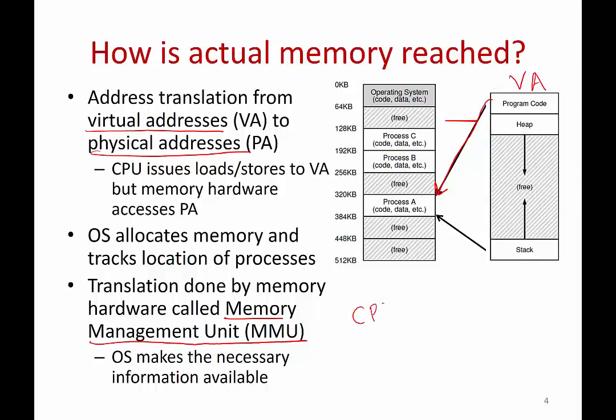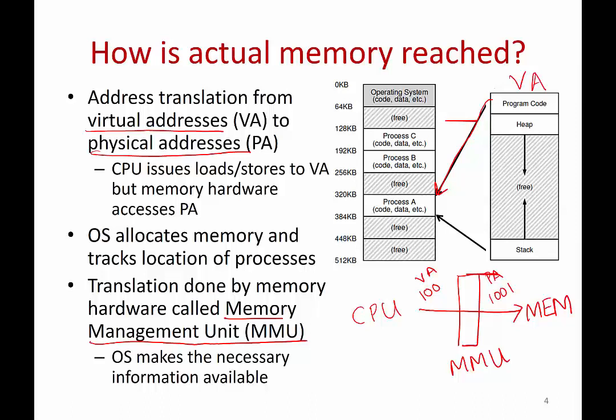When your CPU tries to access memory, it says get me the instruction at virtual address 100. There is a piece of hardware sitting in between called the MMU that takes this request — give me something at virtual address 100 — translates it into some physical address, say 1001 or some other physical address. It does the translation and sends that request to the memory hardware so that the memory hardware can fetch the code and data from the actual addresses in memory and return it back to the CPU. The user thinks they're accessing code and data at a certain virtual address, whereas the actual memory is accessing code and data from a different physical address.